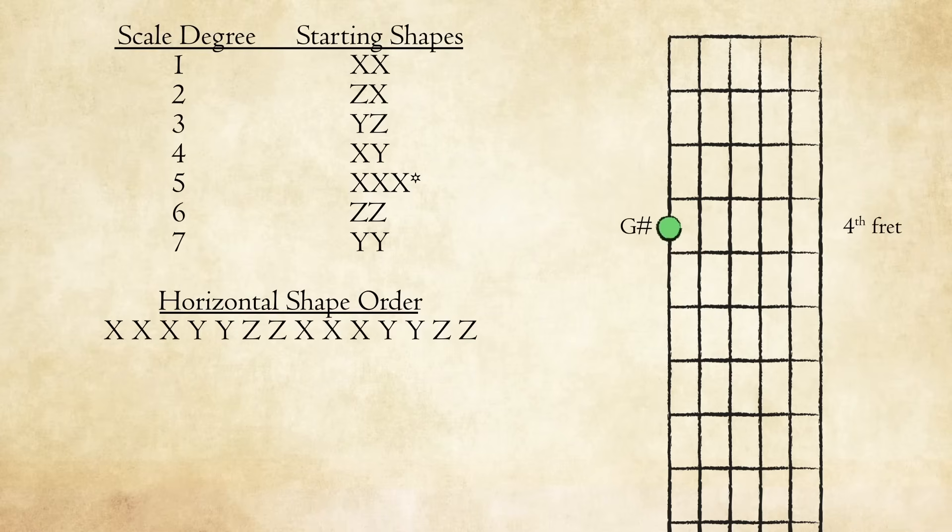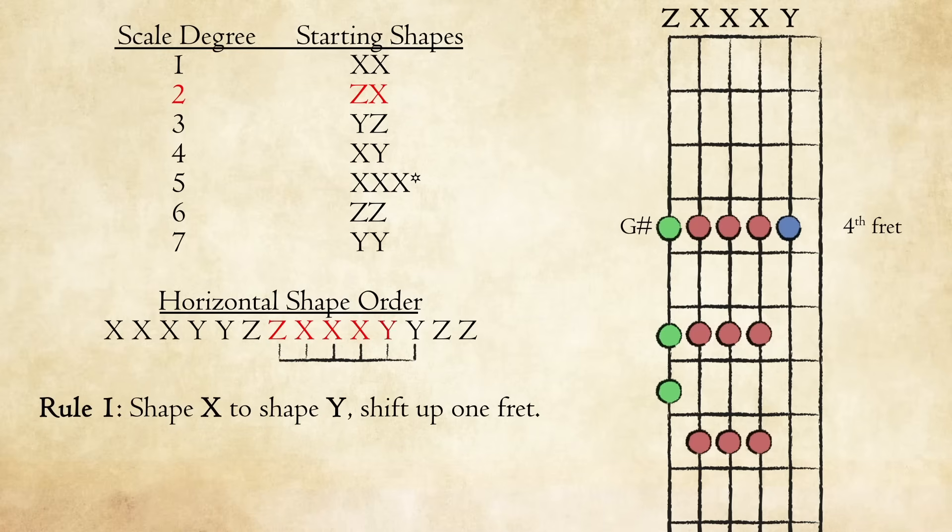We'll do one more for scale degree 2 in the key of F sharp. The second scale degree of F sharp is G sharp. Find G sharp on your fretboard, look at the chart, and remember the horizontal order of the shapes. The pattern for scale degree 2 starts with Z and X. Play those first two shapes. Next, play shape X followed by another shape X. Here at the third string, we have shape X followed by shape Y, so we shift up a fret, and we're moving from the third string to the second string, so we shift up another fret for a two fret shift total. Now play the second shape Y.